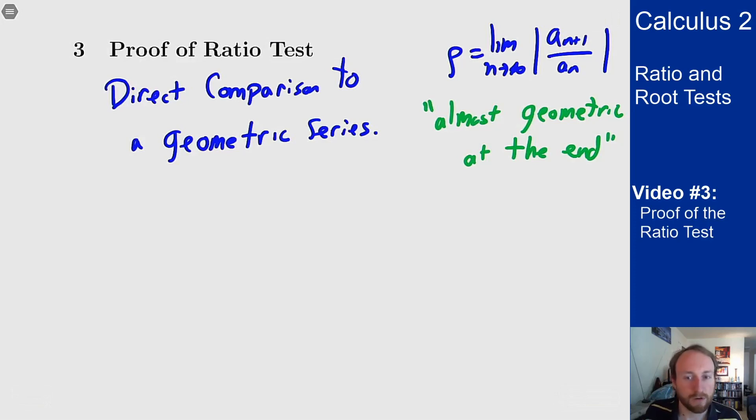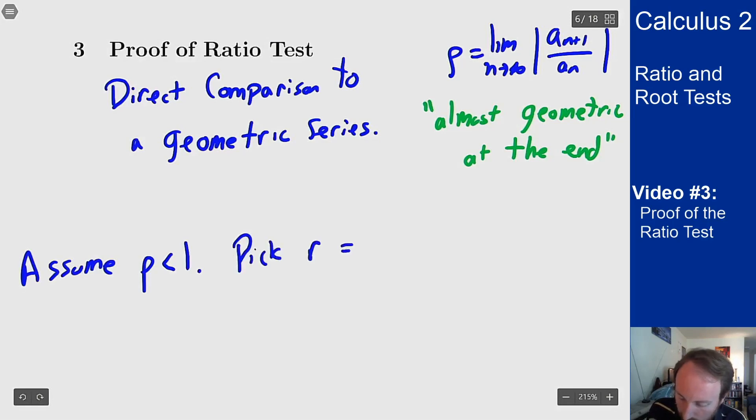Let's try to prove that if ρ is less than one the series converges. So we'll assume that ρ is less than one. With ρ less than one, we'll pick a value r which is going to be (ρ + 1)/2, and since ρ is less than one, this r is between ρ and one.